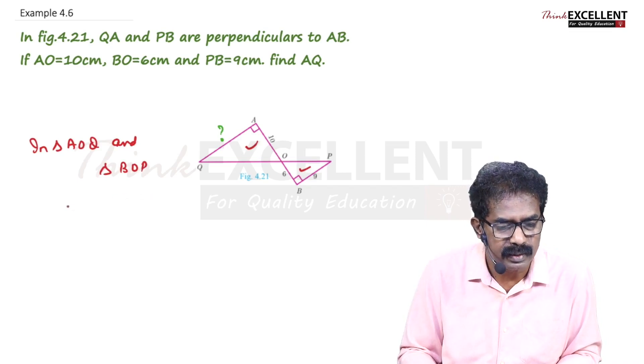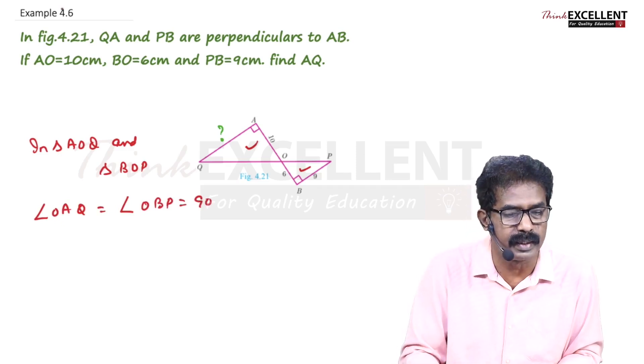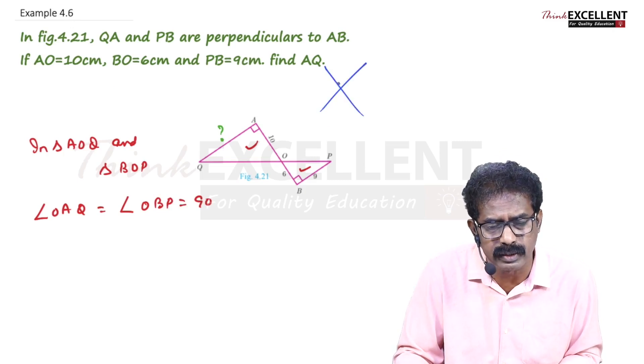90 degrees. Angle OAQ equals angle OBP, and each angle is equal to 90 degrees. And one more angle you can see very easily. If we have two lines like this, these two angles are equal.